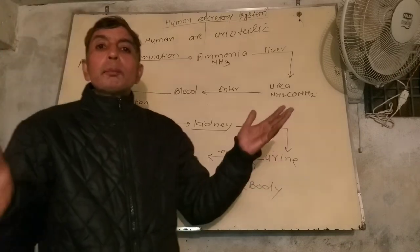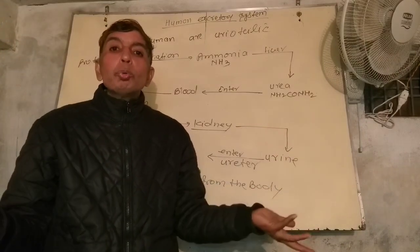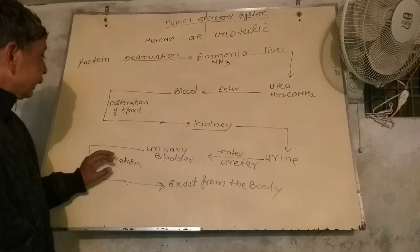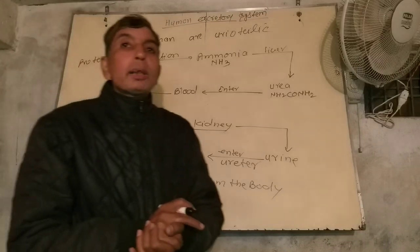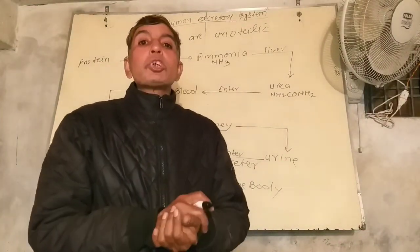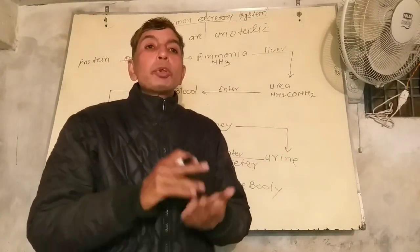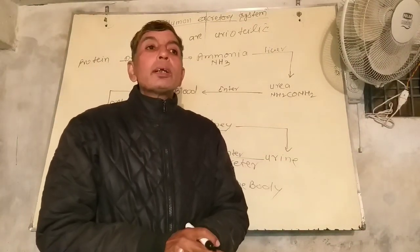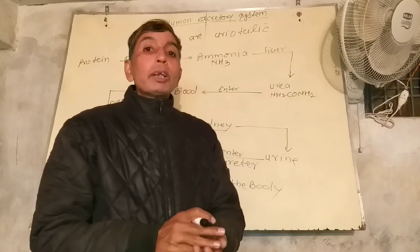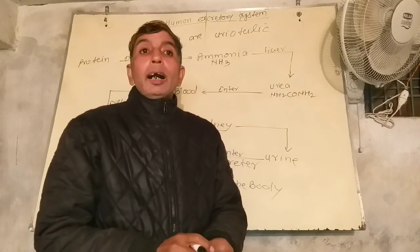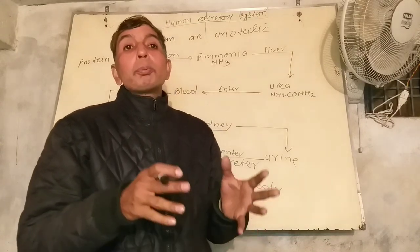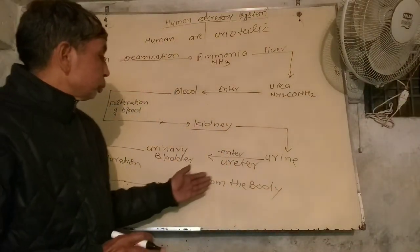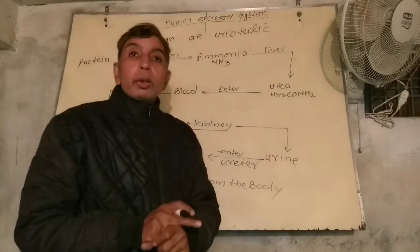The urinary bladder is a pouch that fills with urine. Then by a process called micturition, the body releases urea in the form of urine. That is the removal of waste from the body.